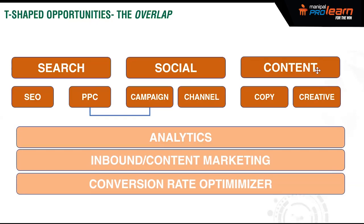Your ad has reached 1 lakh audience, out of that maybe 20 or 30 actually clicked and came to your website, and only two people took the offer — so 1 lakh to 30 to 2. The job of a conversion rate optimizer is: from that 1 lakh, can I make 100 people visit my site, and from those 100, can I make 10 people buy my product or take my offer?